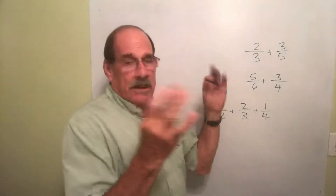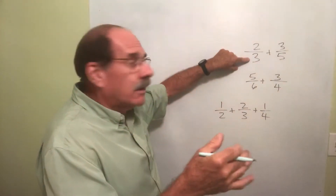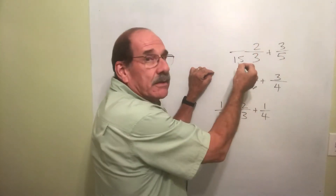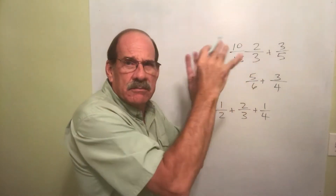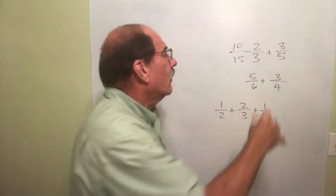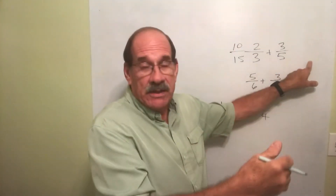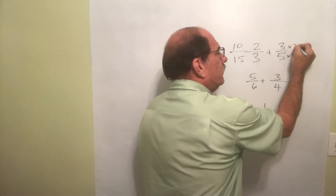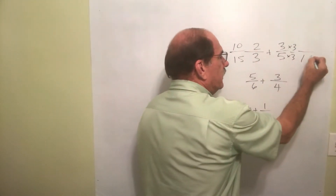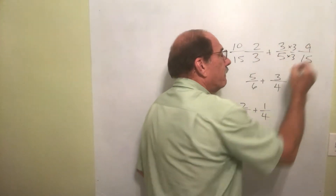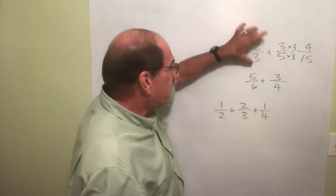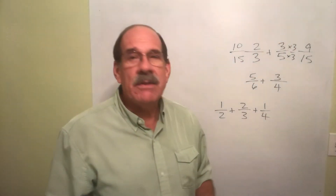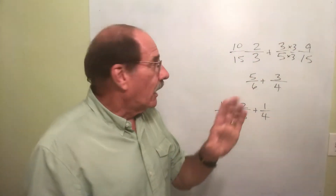What did I do to the 3 to make it into 15? Times 5 — so multiply this times 5, that makes 10 on top. What do you do to the 5 to make it into 15? Multiply times 3. So I multiply the top number by 3 also, that makes 9. This fraction becomes 10/15 and this one becomes 9/15.